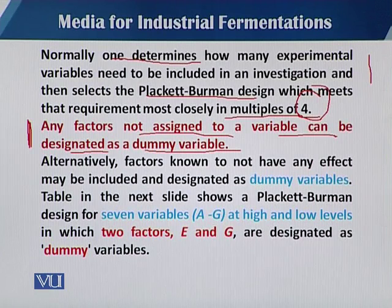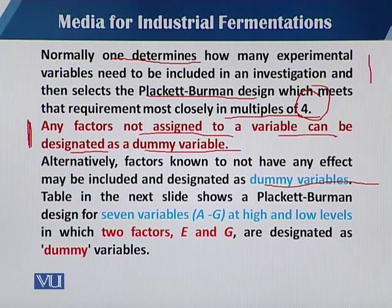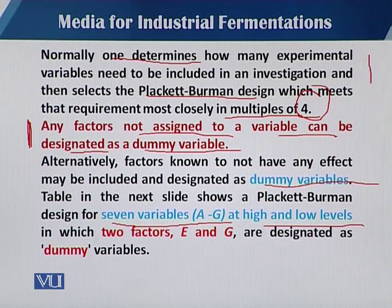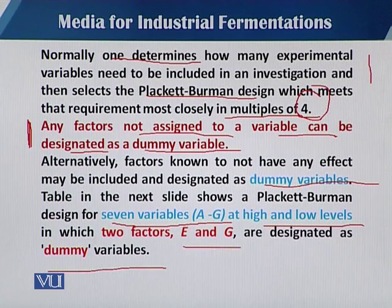Alternatively, the factors known to not have any effect are known as dummy variables. For example, if there are 4 trials and 2 or 3 can be set as dummy trials, they are not actually part of your significant variables. It is compulsory to design dummy variables — that is very important in Plackett-Burman design. In the next slide, you can see a table with an example including 7 different variables named A to G, having 2 different levels: high and low. Variables E and G are designated as dummy variables.